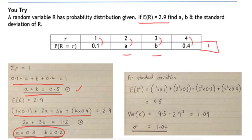Having got A and B, to work out the standard deviation, we can do it by working out the expected value of R squared. So 1 squared times 0.1, 2 squared times 0.3, 3 squared times 0.2, and 4 squared times 0.4. And remember, the variance is the expected value of R squared, 9.5, take away the expected value of R squared.